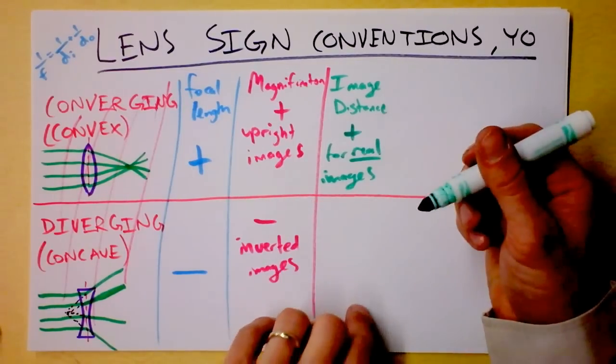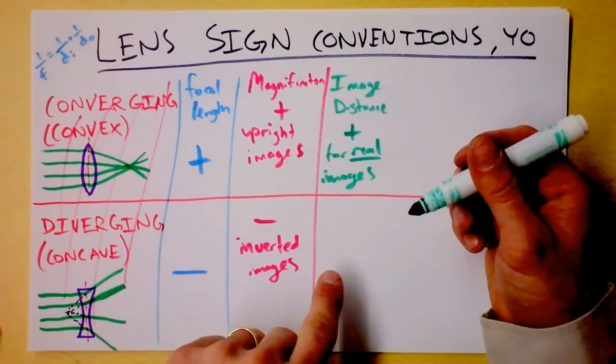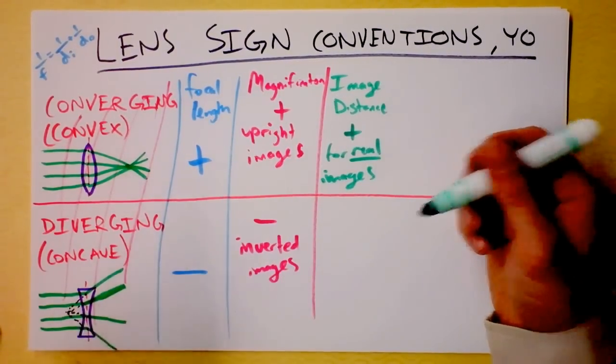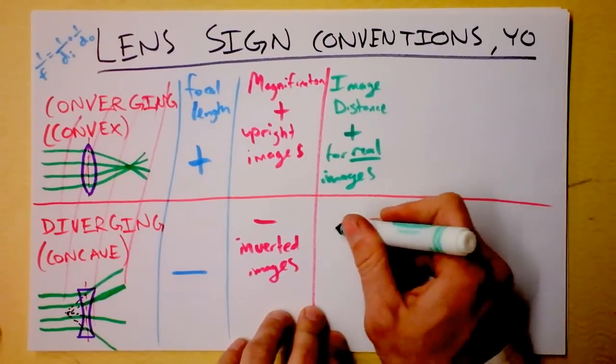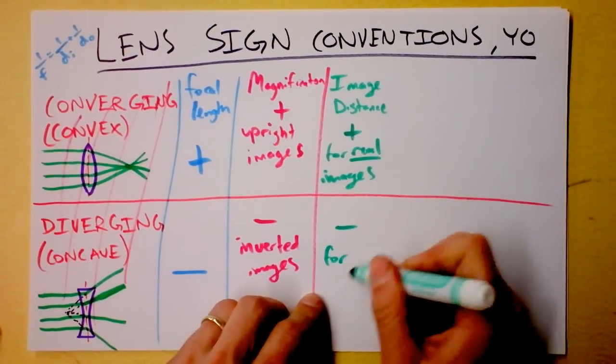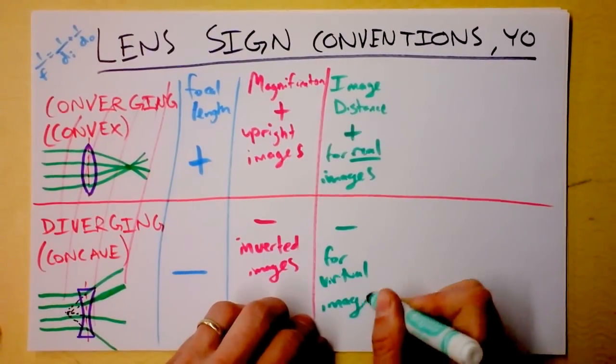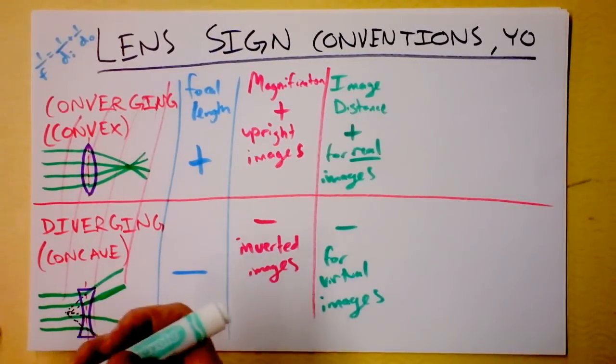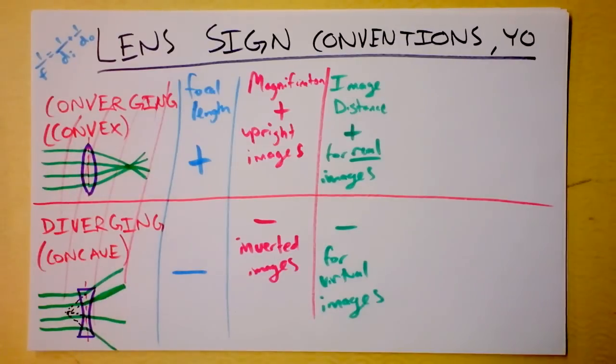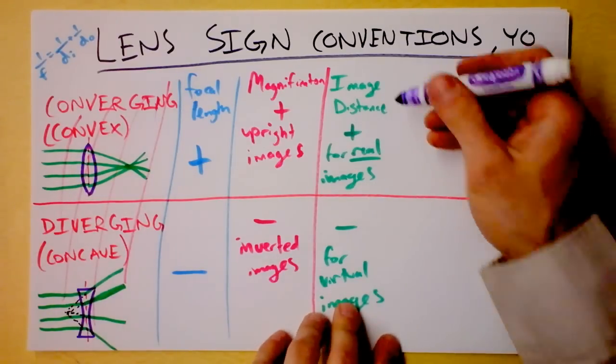Problem is, if the image is virtual, then that means it's on the wrong side. So we're going to get a negative image distance for virtual images. It's sort of asserting what side we expect to find things on. And if we don't find them there, then we're going to get that thing a minus sign.